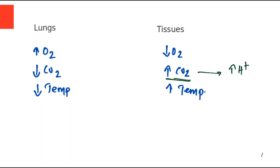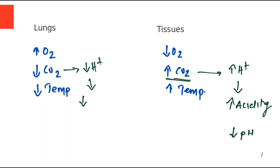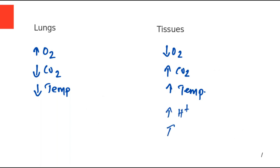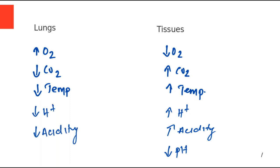Whenever H⁺ ion concentration is high, that causes high acidity, and high acidity means the pH of that area will be low. In the lungs, the carbon dioxide concentration is low, meaning low concentration of H⁺, which means low acidity and therefore high pH. So in the tissues: high H⁺, high acidity, low pH. In the lungs: low H⁺, low acidity, high pH.